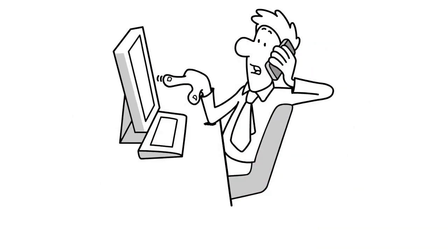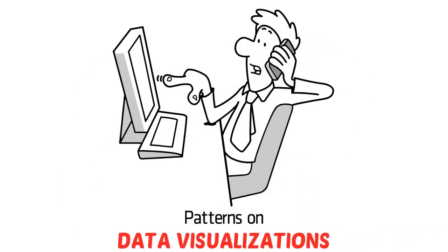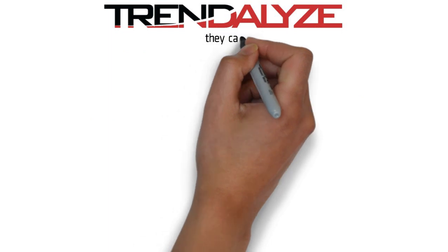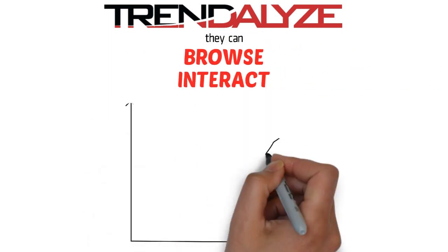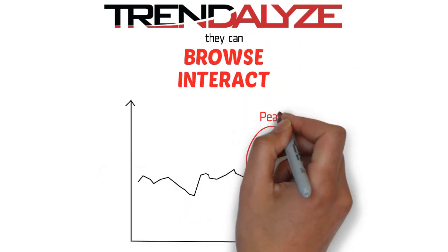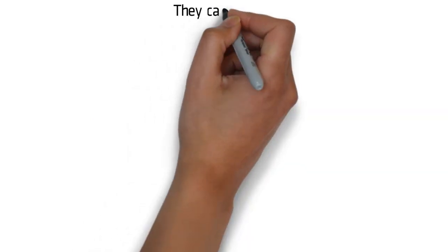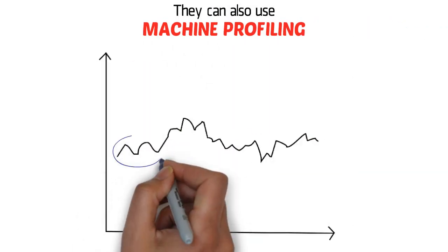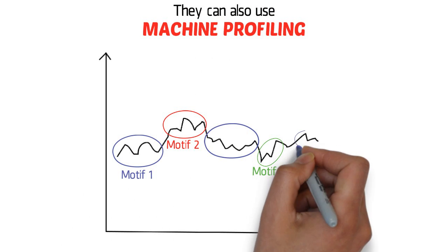Professionals are good at spotting patterns on data visualizations. With Trendalyze, they can browse and interact with time series visualizations to discover unusual peaks and dips. They can also use machine profiling to automatically catalog all patterns in the data.